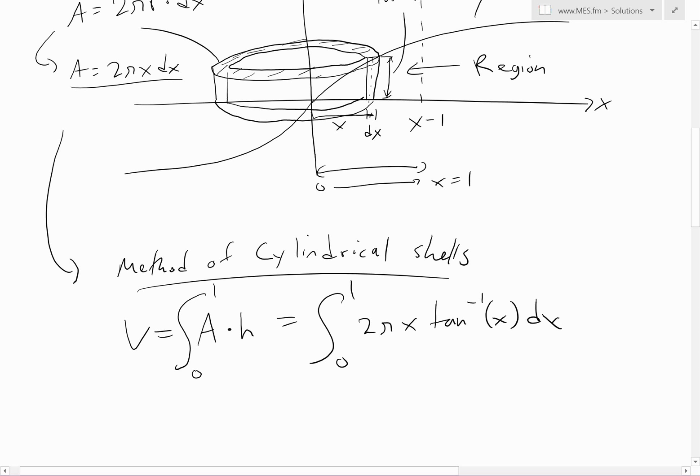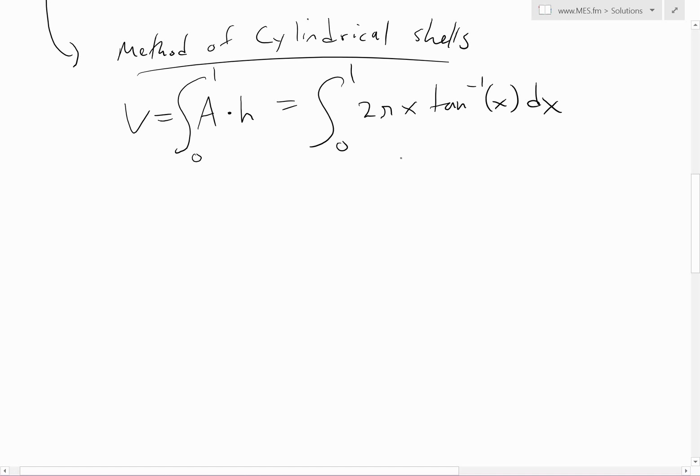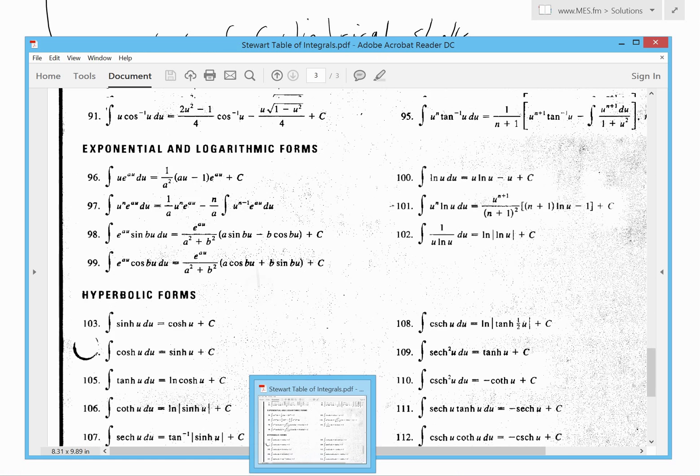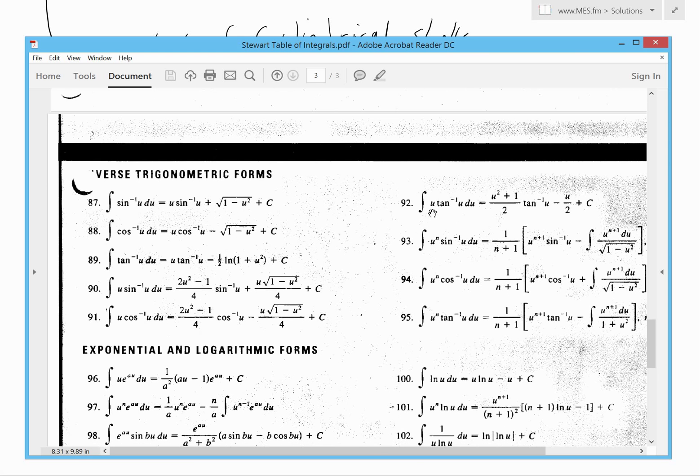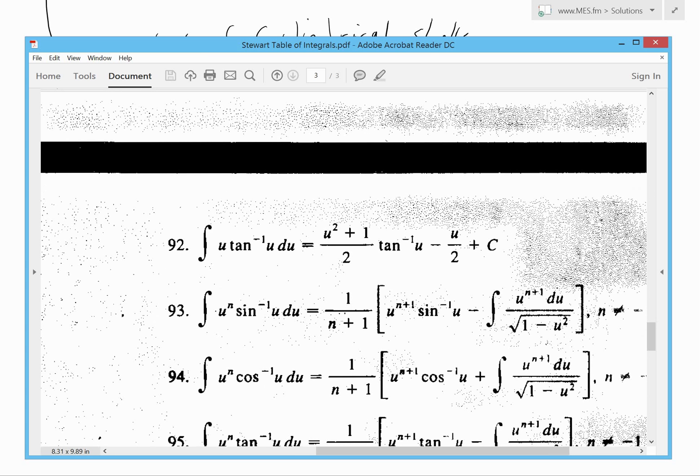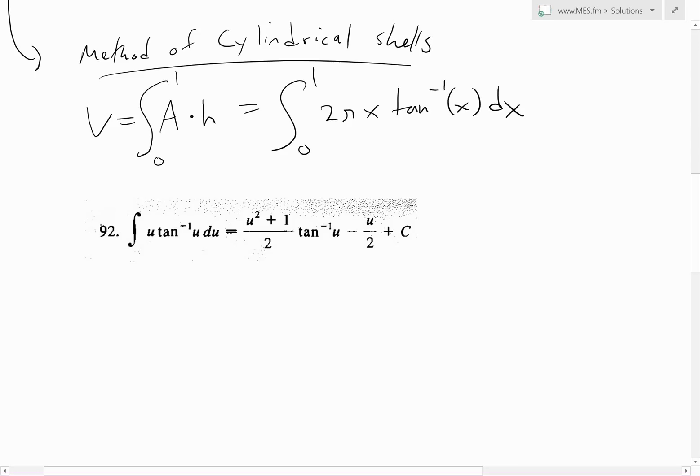If we look at our table of integrals, scrolling up to inverse trig, we see this one right here, which is u tan⁻¹(u) equals this right here. That's number 92. We can copy and paste that formula from the table.